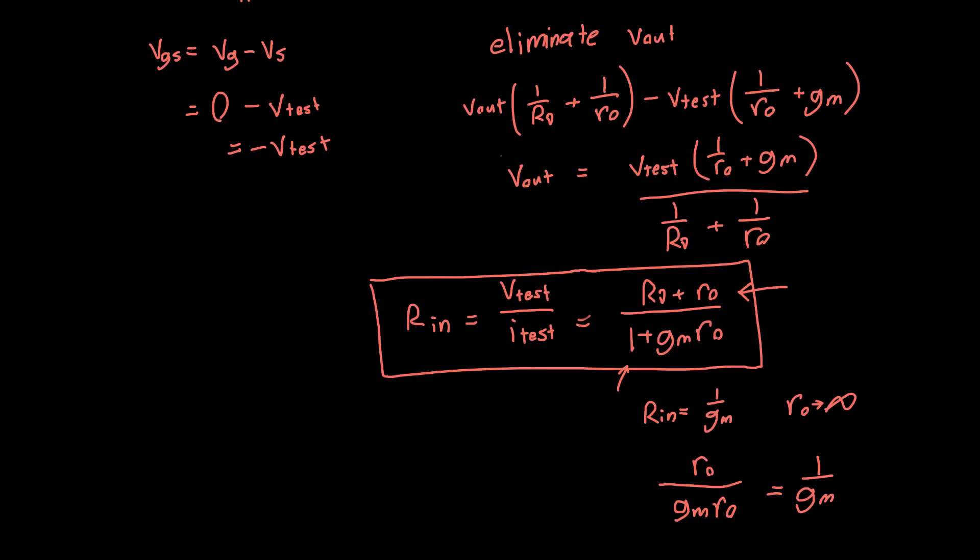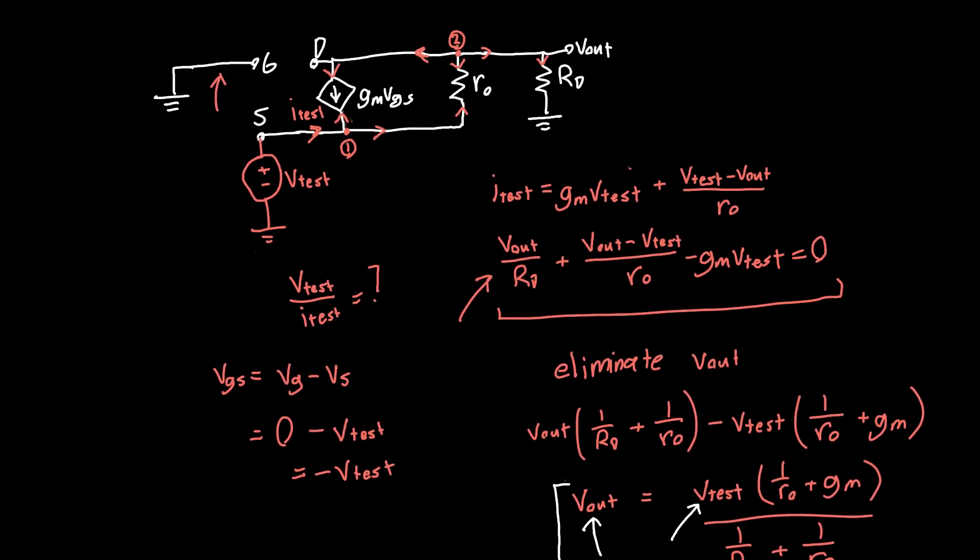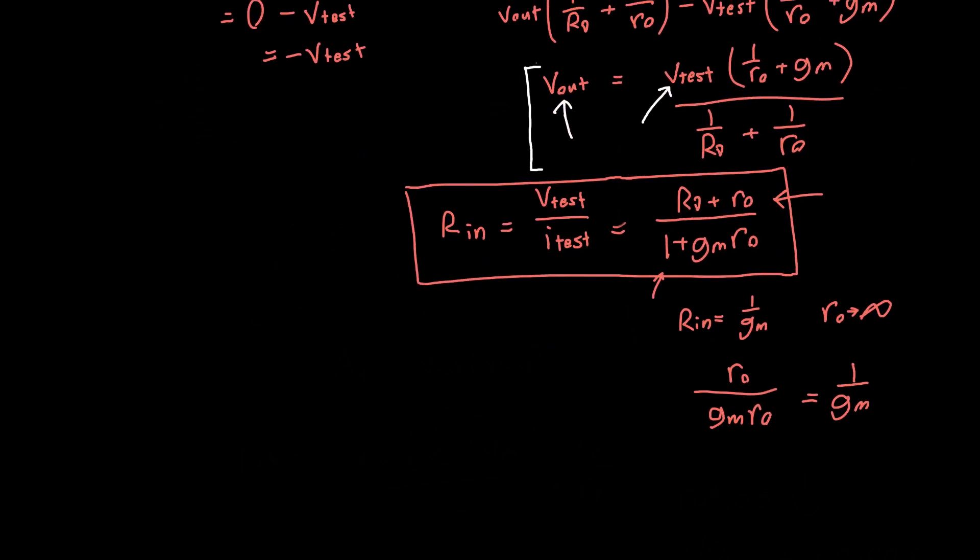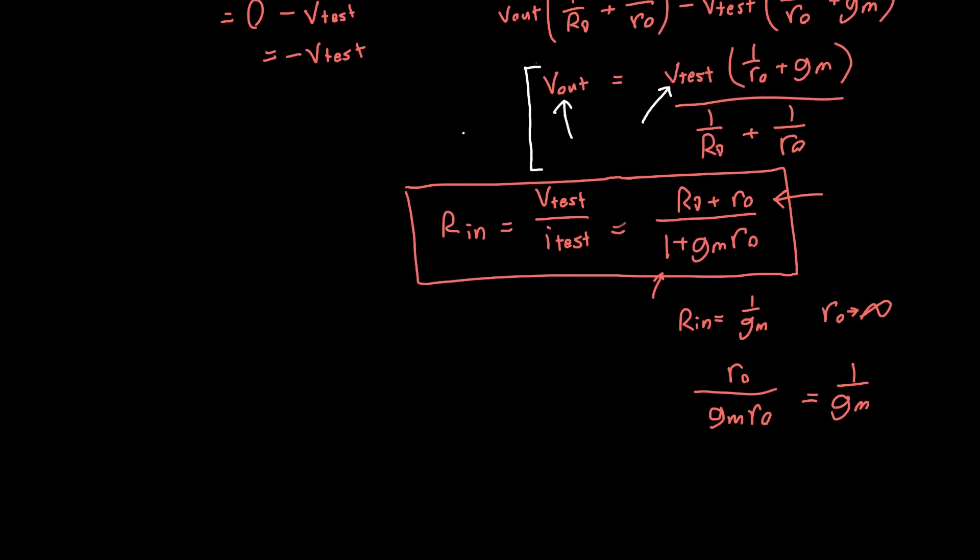Now, you'll notice something interesting about the previous analysis. One of the equations we came up with is only a function of V test in terms of V out, and we're applying V test and V in to the same exact place. So, if we just change the name of this V test and call it V in, this expression here actually just gives us the voltage gain. We got the voltage gain for free during calculating the output resistance.